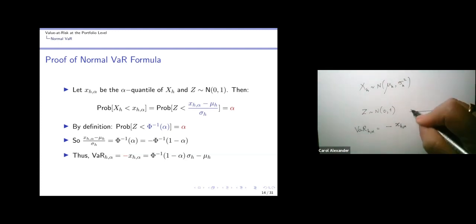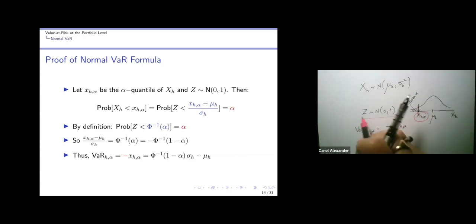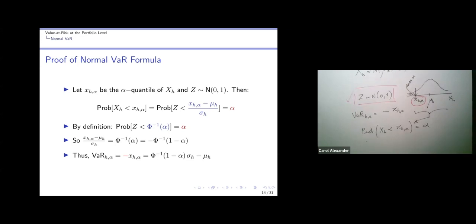In our distribution here, this is X_H and this number here is x_H alpha, where this area is alpha. That's what we want to find. This is now mu, not zero, mu_H actually, and we've got plus three sigma_H, minus three sigma_H there. The question is, how do we find this number here when we do know the phi's for the standard normal? In words, this diagram can be written as: the probability that X_H is less than x_H alpha is equal to alpha. That's the same thing as the diagram, but just written in words.